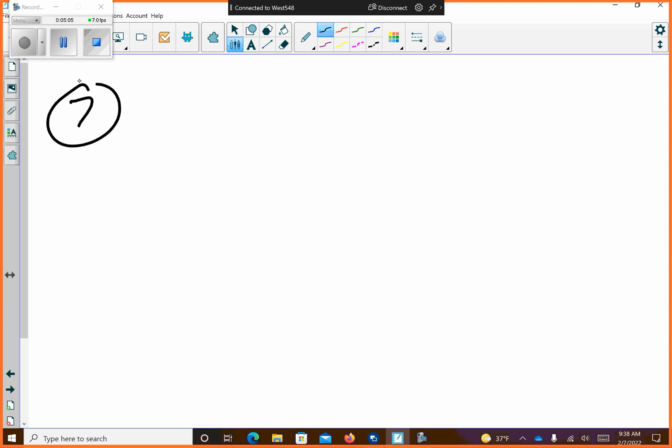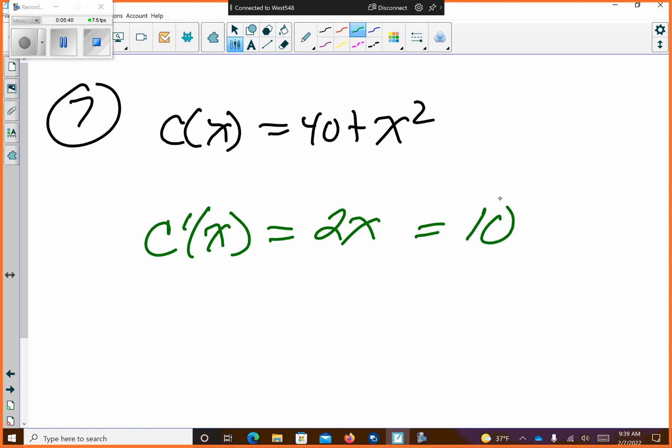All right. Suppose the cost function for a commodity is c at x equals 40 plus x squared. Find the marginal cost at x equals 5. Tell what this predicts about the cost of producing an additional unit. Calculate c(6) minus c(5). So I think what we need to do is we need to do the first derivative of this, which is going to give me 2x. And then I can find when x equals 5, so I get 10. So this is basically find the marginal cost, $10 cost per item. So that's the answer to a.